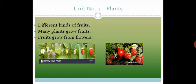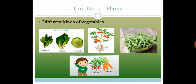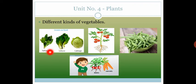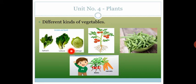Now we will discuss different kinds of vegetables. Some vegetables are the leaves or the stems of plants. Some leaves we use as food — for example, spinach, lettuce, and cabbage. These are all leaves of the plant, but we also use them as vegetables.